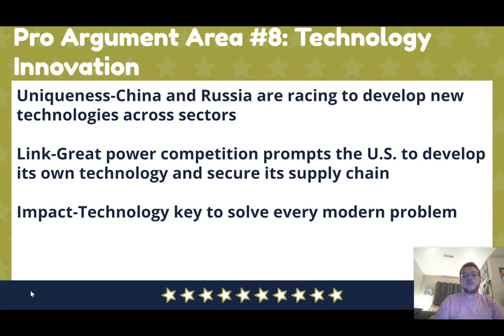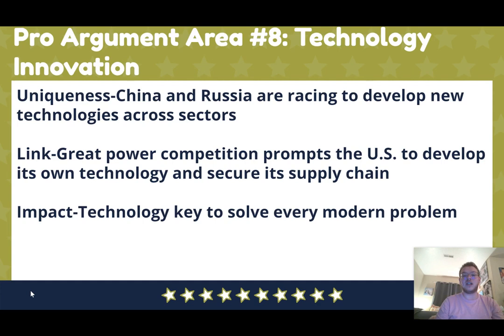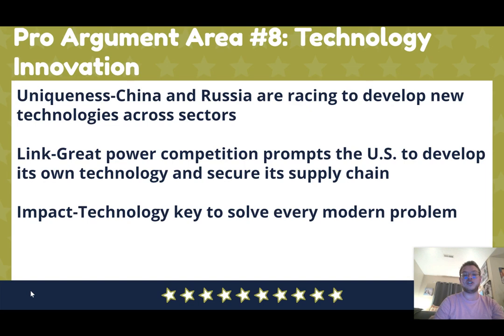The eighth argument area is technology and innovation. China and Russia are racing to develop new technologies in artificial intelligence, cybersecurity, biotechnology, outer space, military, and healthcare. Great power competition causes us to race to develop the best technology faster, generating innovation that makes people's lives better. It also means we don't rely on Russia and China for technology components. The impact is that technology development will be crucial to solving every modern problem we face.